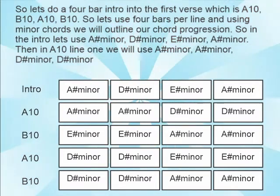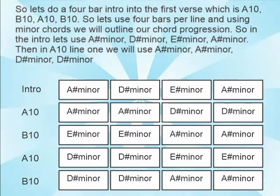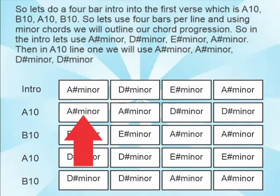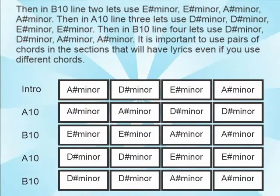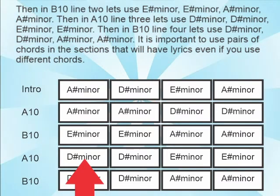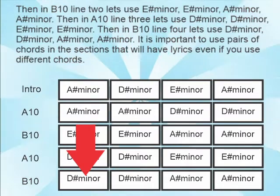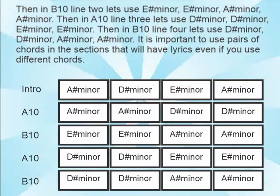In the intro, let's use A# minor, D# minor, E# minor, A# minor. Then in A10 line one, A# minor, A# minor, D# minor, D# minor. In A10 line three, D# minor, D# minor, E# minor, E# minor. Then in B10 line four, D# minor, D# minor, A# minor, A# minor. It's important to use pairs of chords in the sections that will have lyrics, even if you use different chords.